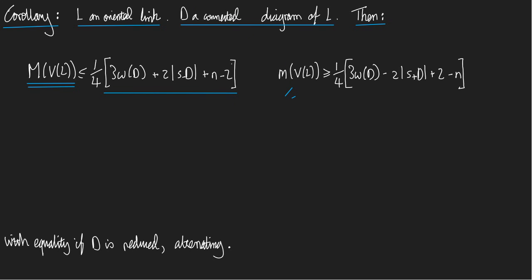And little m of V_L, the lowest power appearing in the Jones polynomial of L, that's bigger than or equal to one quarter of this creature: three times the writhe of D, minus twice the number of components in the smoothing S plus D, plus two minus n.